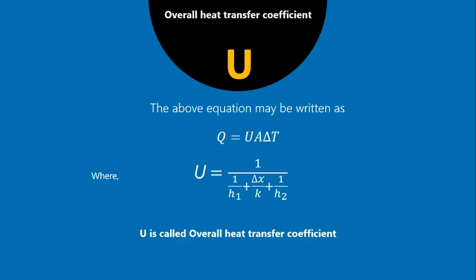We can also write the heat transfer in terms of U, the overall heat transfer coefficient. The overall heat transfer coefficient U is given by: 1/U = 1/H1 + ΔX/K + 1/H2. This is the overall heat transfer coefficient combining convection and conduction, used in cases of combined heat transfer.